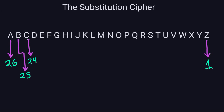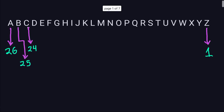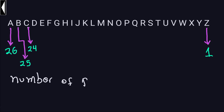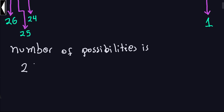So how many possibilities are there in total? For every choice I have for one letter, I have another choice for the next, and so on. The total number of possibilities is the multiplication of all those numbers: 26 × 25 × 24, and you continue multiplying until you reach the last number, which is 1.